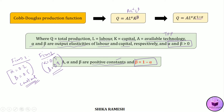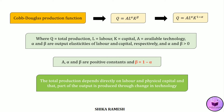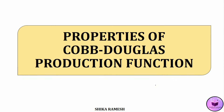In short, the Cobb-Douglas production function shows that the total output or total production depends directly on labor and physical capital, and part of the output is produced through change in technology. Now let's look into the properties of the Cobb-Douglas production function.